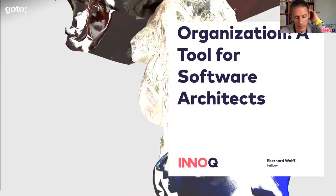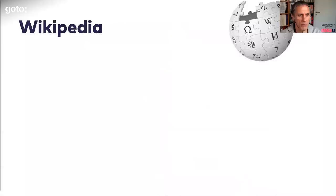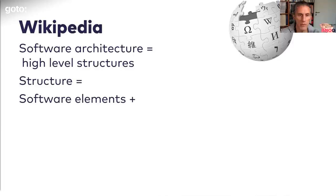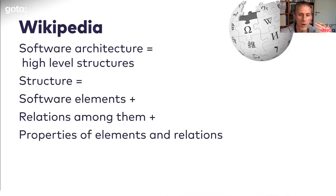The most important slide in the presentation is the one right before the conclusion, and that's the one I will probably talk the most about. If you look at Wikipedia, software architecture is defined as the high-level structures of your system — the software elements, relations among them, and properties of elements and relations. That is why we get all those boxes-and-arrows diagrams that say there are some elements and they somehow relate to one another.